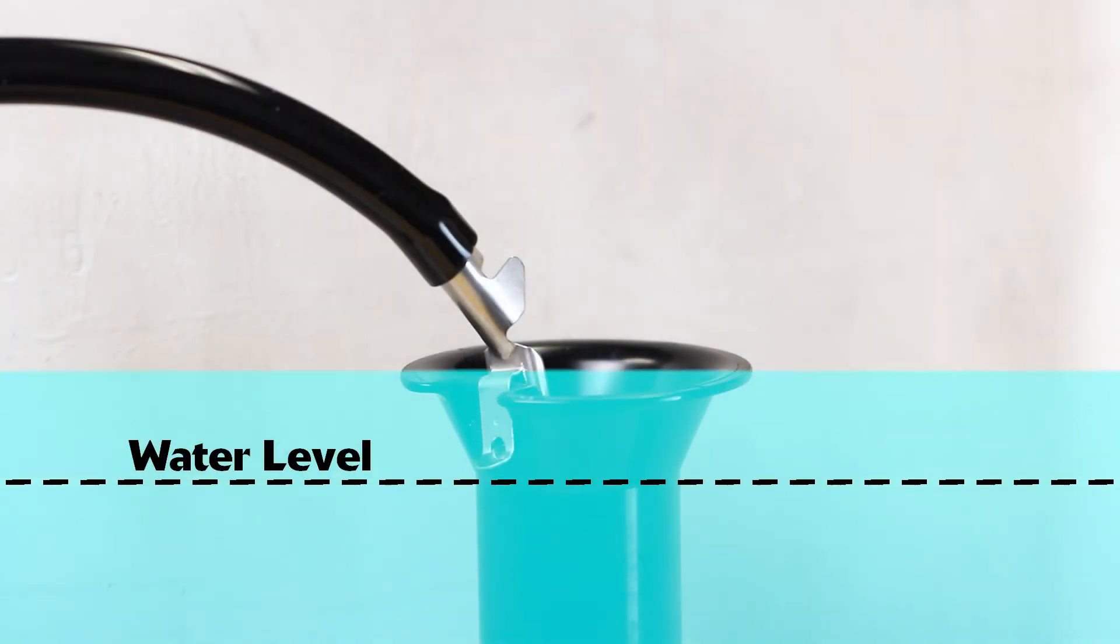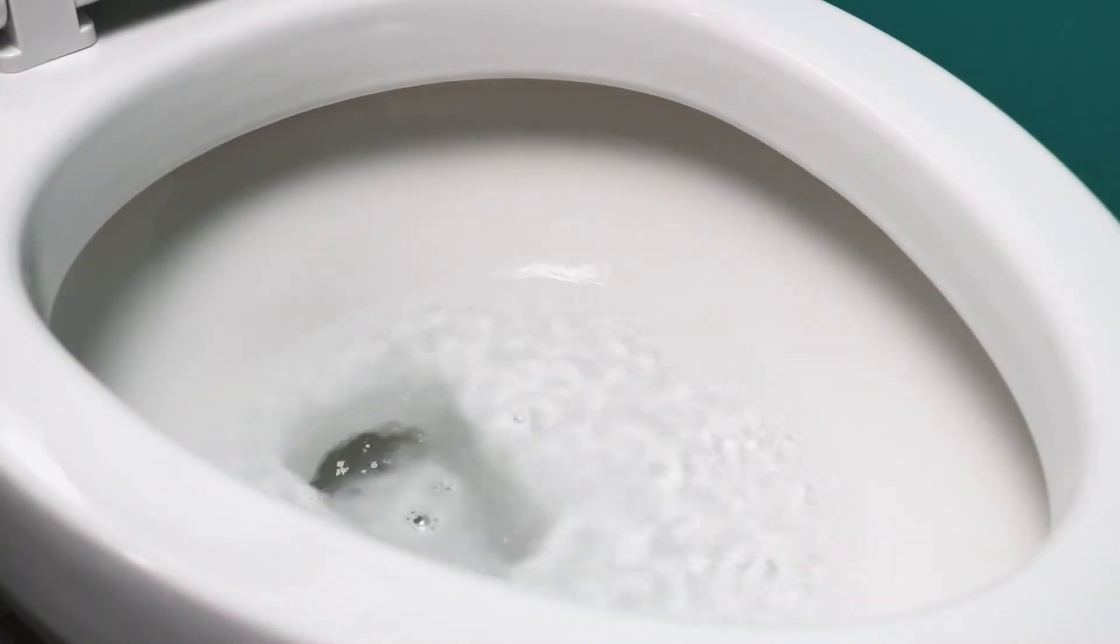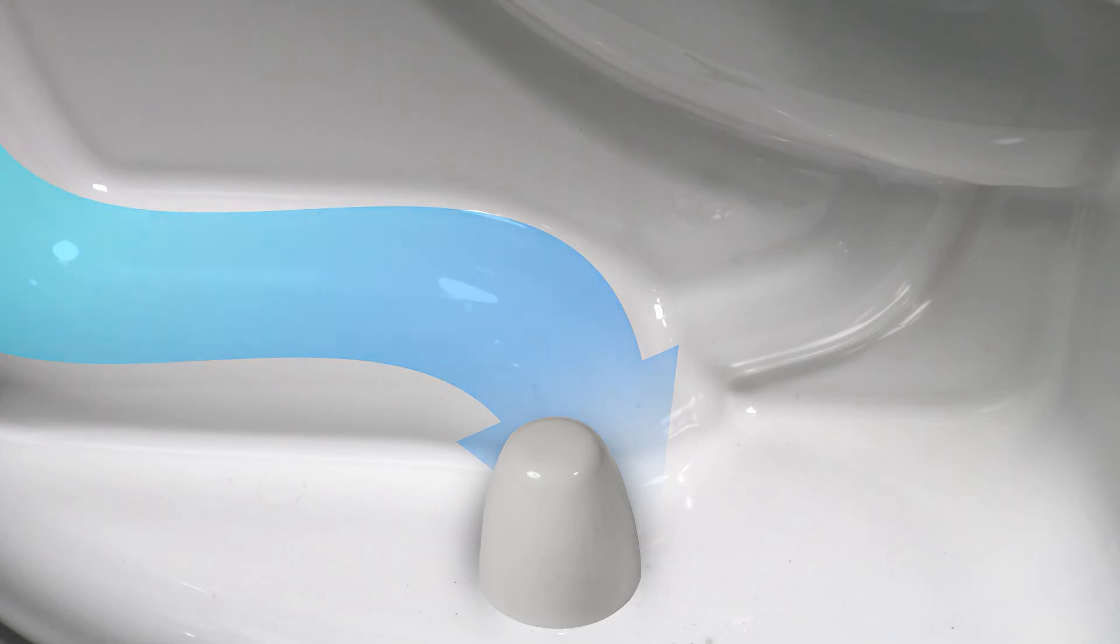If the water level continues to rise in the tank, water will spill into the overflow tube, drain into the toilet bowl, pass through the bowl outlet, and down to the floor drain.